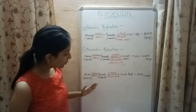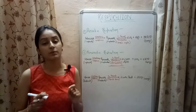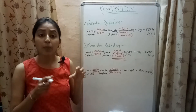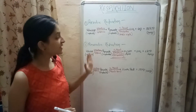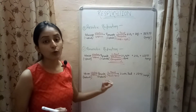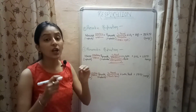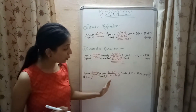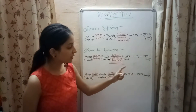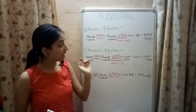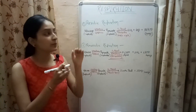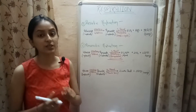Anaerobic respiration also occurs in human muscle cells when we do vigorous exercise, due to lack of oxygen in the body. Partial breakdown of glucose occurs by anaerobic respiration, releasing two molecules of ATP. But instead of ethanol, which is produced in yeast, in our body lactic acid is produced.